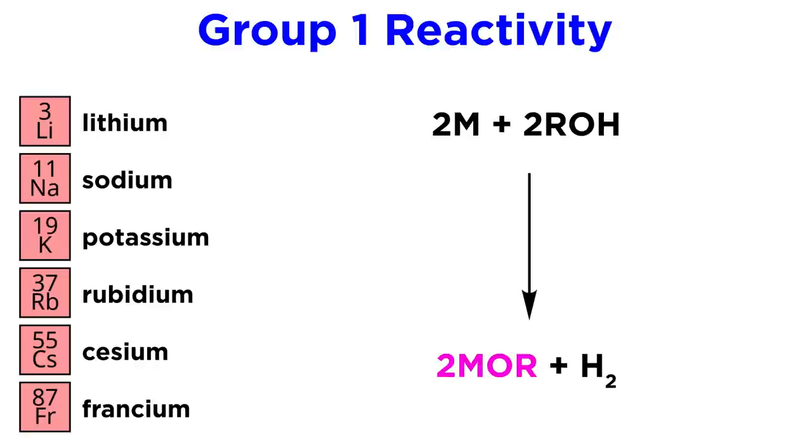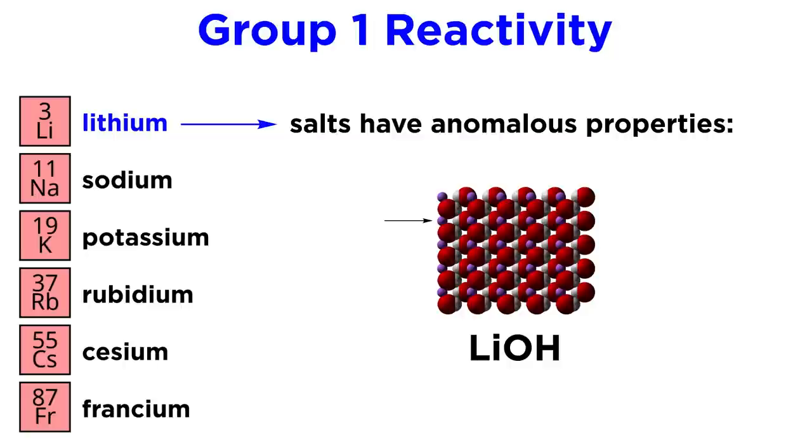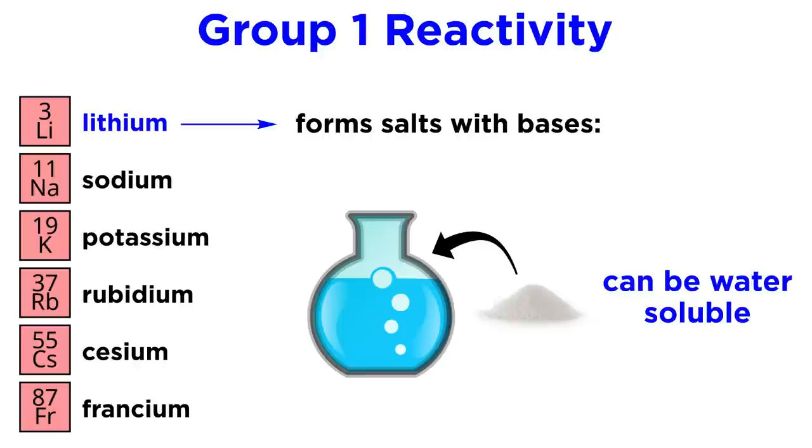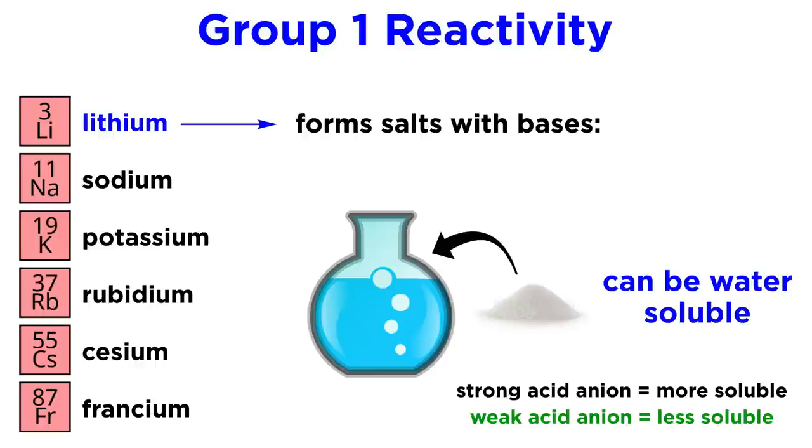These metals also react with alcohols to produce metal alkoxides. A variety of other salts are also possible. Lithium salts have anomalous properties due to the very small size of the lithium cation. Lithium hydroxide decomposes to lithium oxide for better ion packing, while other alkali metal hydroxides sublime. Lithium forms salts with halides that are soluble in organic solvents. It can form salts with the conjugate bases of Bronsted-Lowry acids that are water-soluble to varying degrees. If derived from a strong acid, the salt is very soluble, due to the mismatch of ion size. If derived from a weak acid, the salt is less soluble because of the strong bonding in the crystal lattice, which outweighs the energy released in solvation.